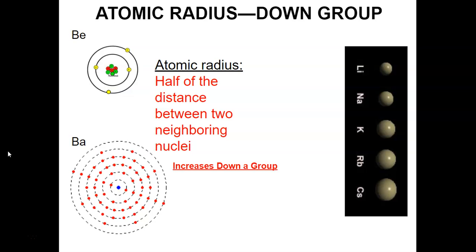As we go down a group from top to bottom, atomic radius increases. If you look at group 2, barium is much larger than beryllium. As we go down a group, we're adding more energy levels — basically shells of electrons — and this makes it larger and larger. You can imagine this like putting on a light jacket, then another coat, and another coat — you're going to get bigger and bigger.